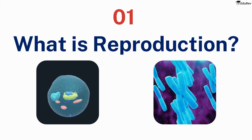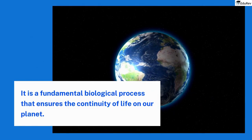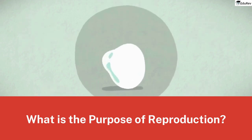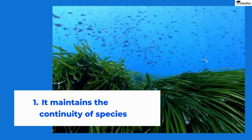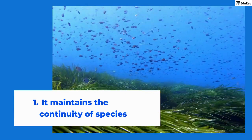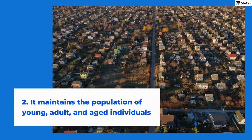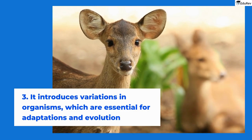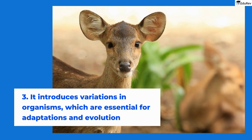Let's first see what reproduction is. It is a fundamental biological process that ensures the continuity of life on our planet. But what is the purpose of reproduction? It's crucial for several reasons. Firstly, it maintains the continuity of species. Secondly, it maintains the population of young, adult, and aged individuals. Thirdly, it introduces variations in organisms, which are essential for adaptations and evolution. Finally, life exists on Earth due to reproduction in organisms.